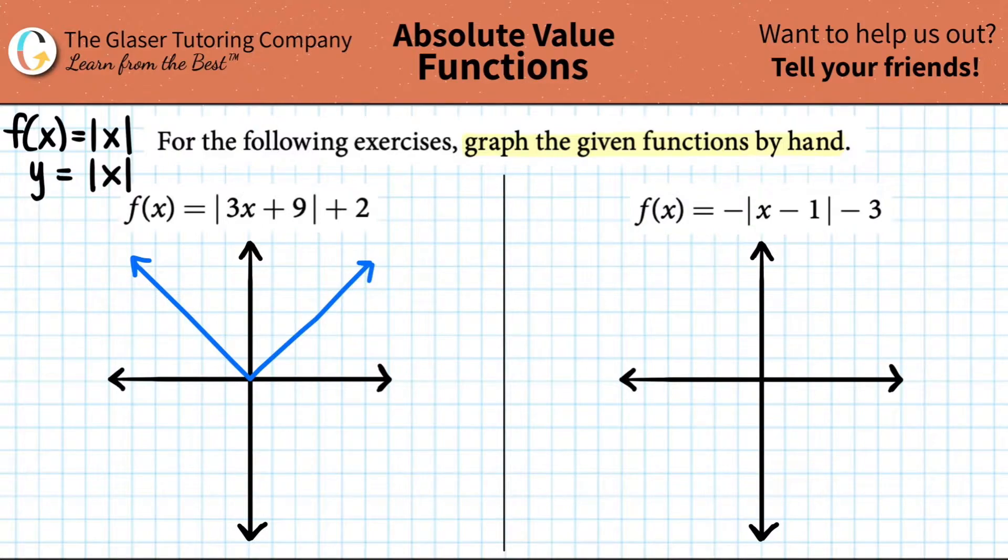It's a v. It starts in the origin and you go up one over one on both sides. So you kind of get like this nice linear straight v on both sides. So definitely just memorize what that graph looks like. Now, the next thing is that before you do anything else, if there is a 3 times the x value inside, we want to get rid of that immediately.